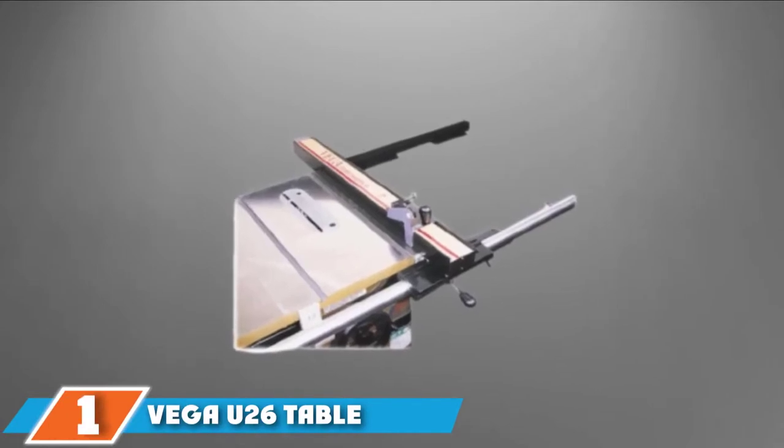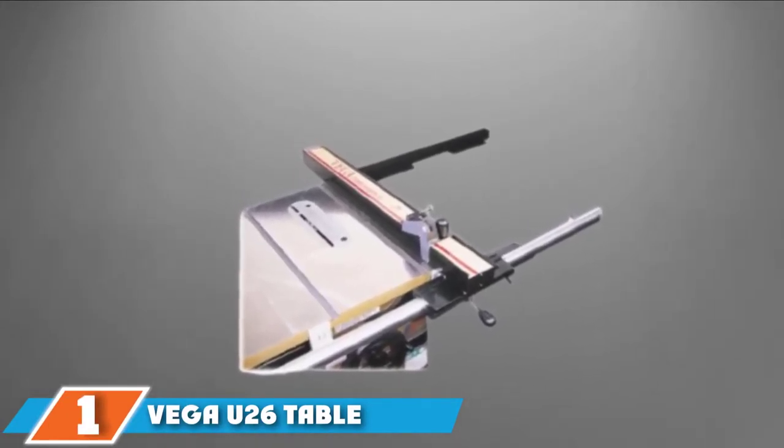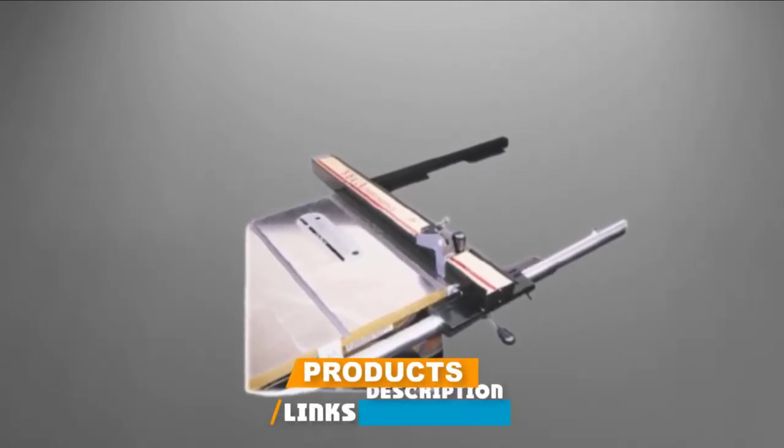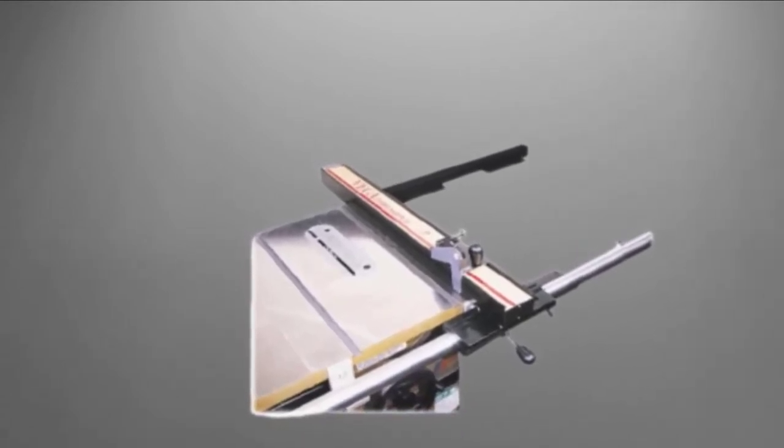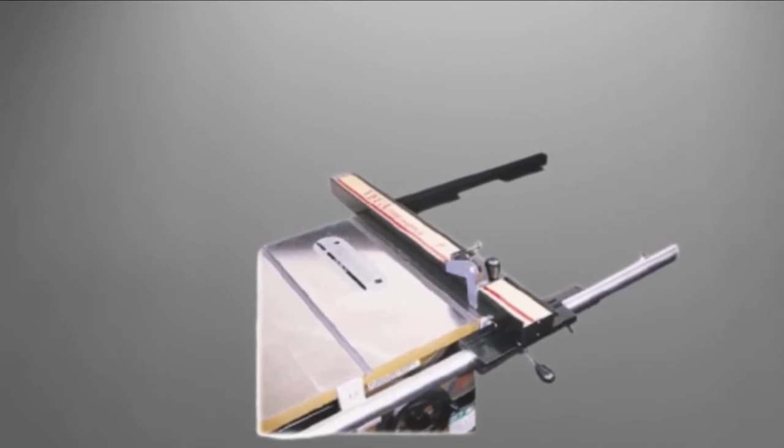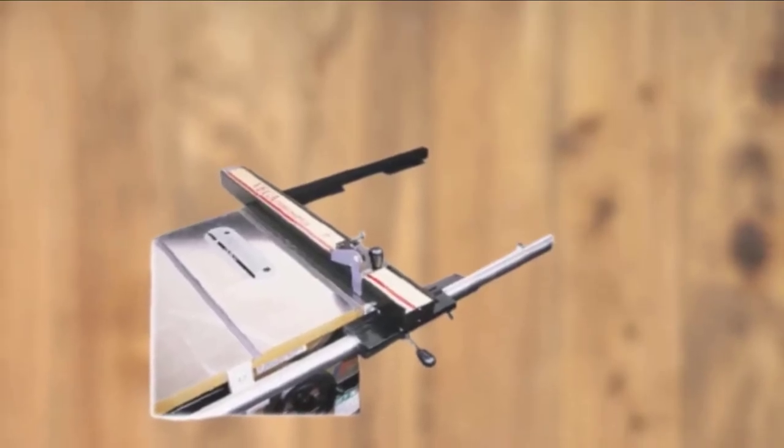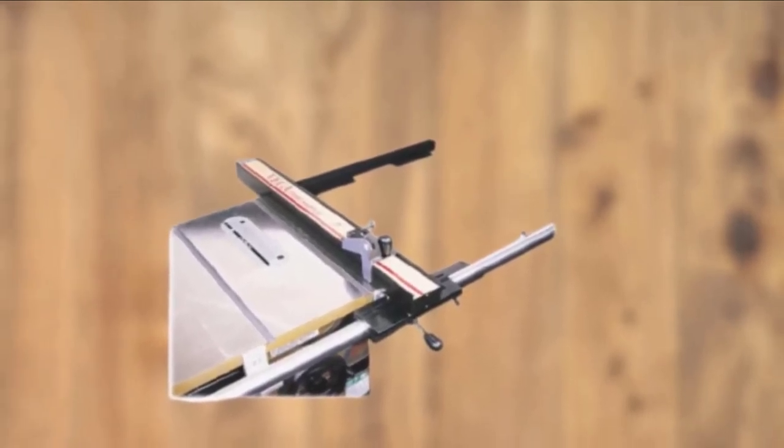At the first position of our list, we have Vega U26 table saw fence. Vega U26 table fence is the most sought high-end table saw fence currently ranking on the market. The fence system is designed to be compatible with a variety of table saws. The package contains both the rear and front railings for fence clamping. The rip size is eight inches to the left side and 26 inches to the right of the saw blade, so adequate space is available for making desired rips of any range.